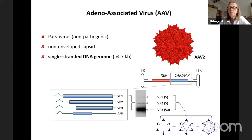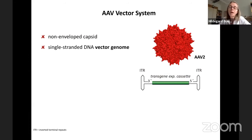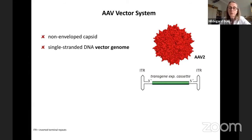When you move from the virus to the vector, you replace all viral genes with your transgene expression cassette, which means you provide a promoter, your gene of interest, and stop codon sequences. The only elements that remain from the virus are the packaging signals — the ITRs — which flank both ends of the transgene expression cassette. This DNA is then transported by the AAV capsid, which is a non-enveloped protein shell.